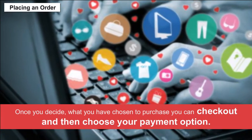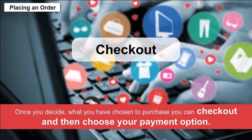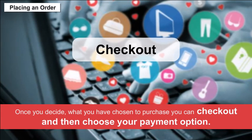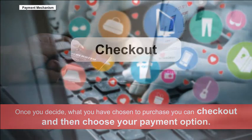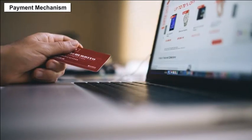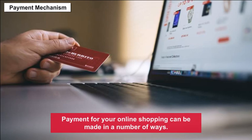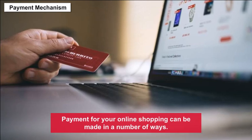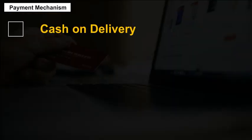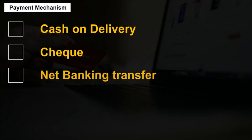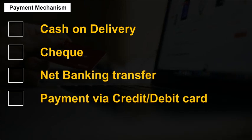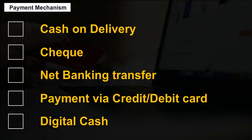Once you decide what you want to purchase, you can check out and choose your payment option. Payment mechanism: Payment for online shopping can be made in a number of ways, such as cash on delivery, cheque, net banking transfer, payment via credit or debit card, and digital cash.